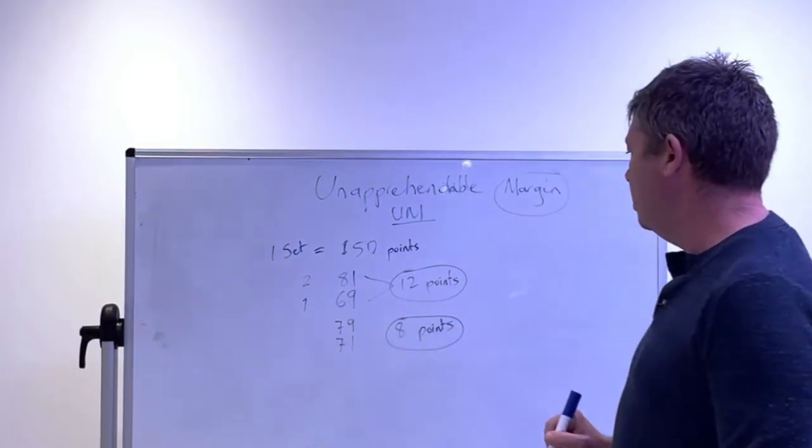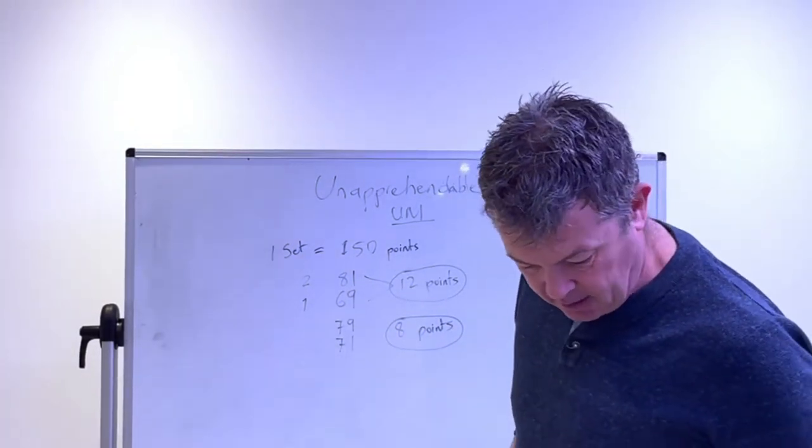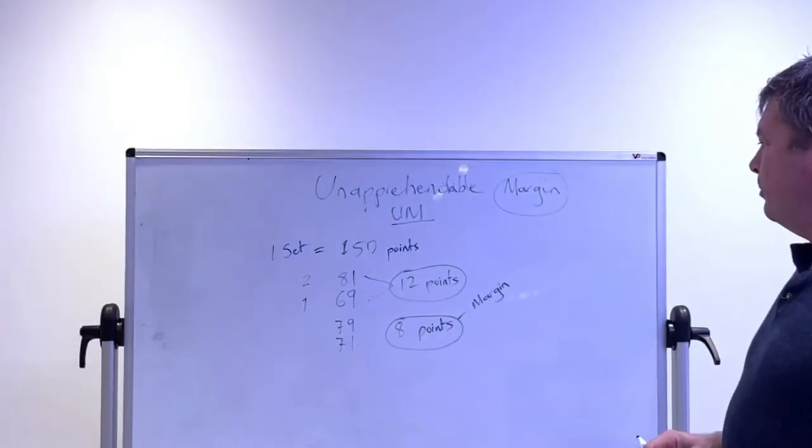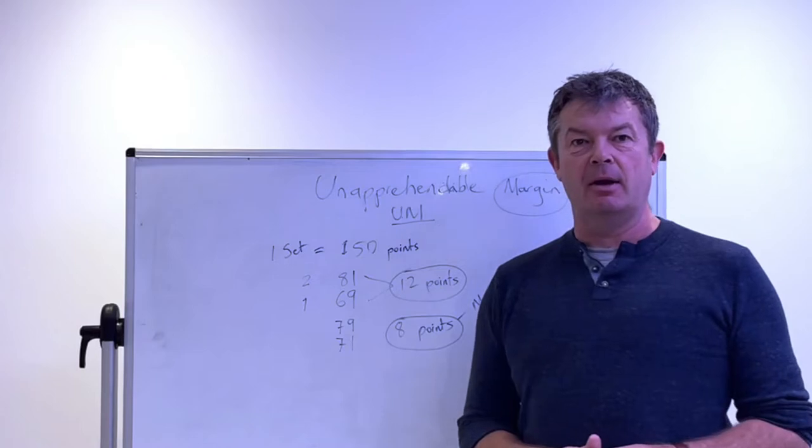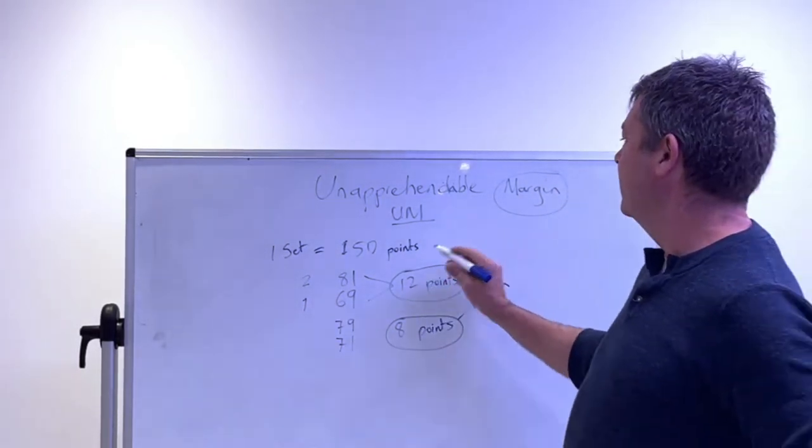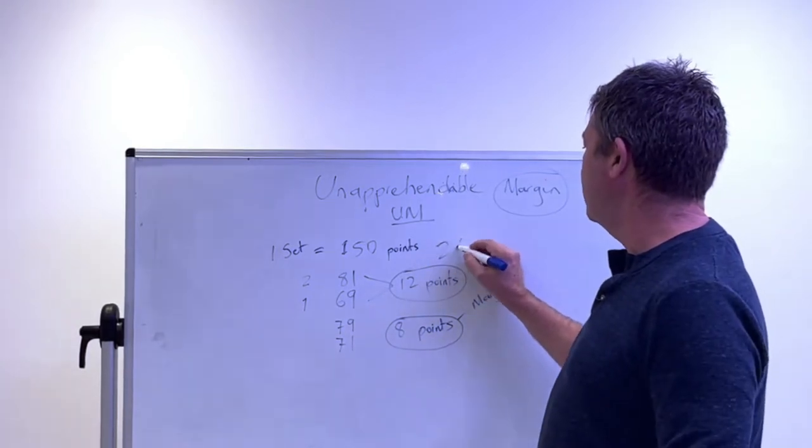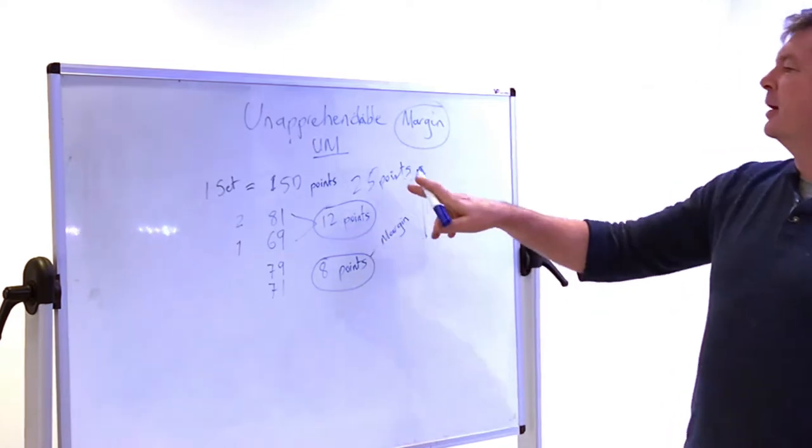If we bring it down, 79, 71, that's more common. It can be lower than that, but I would say that this margin, the difference between the winning player and the losing player is eight points. That's more common from the data from the matches that we analyze.